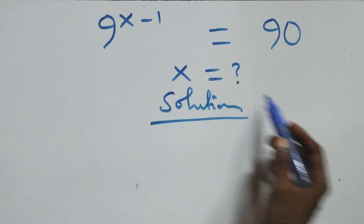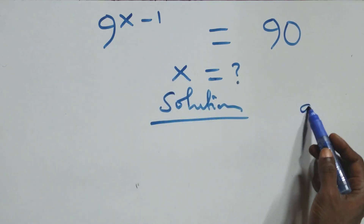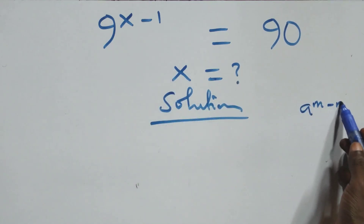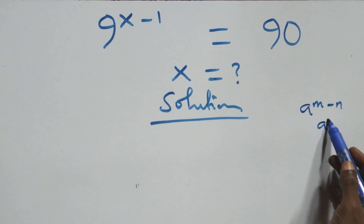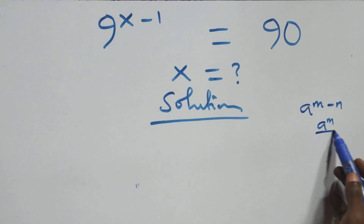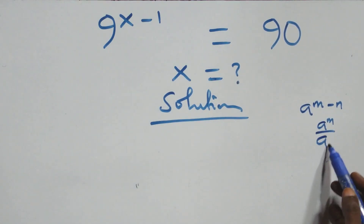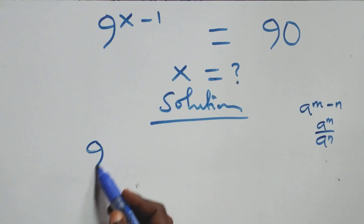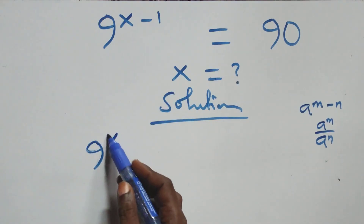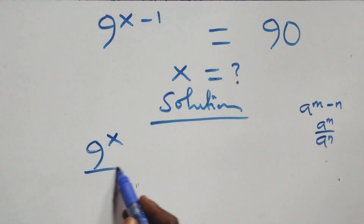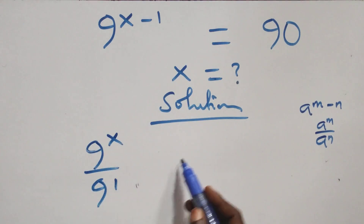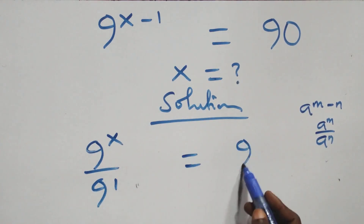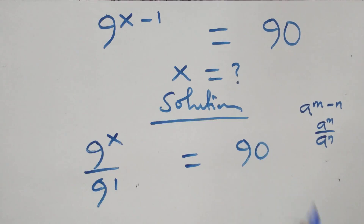From what we have here, this follows from where we have a raised to power n minus n, which is the same as a raised to power n over a raised to power n. This becomes 9 raised to power x over 9 raised to power 1, equals to 90 on this side.